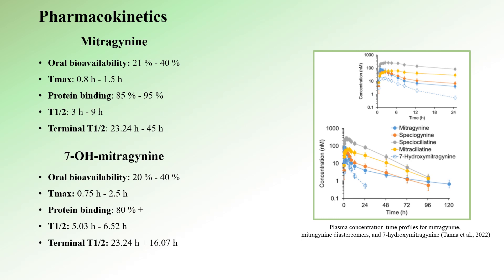As for 7-hydroxymitragynine, its oral bioavailability falls within a similar range to mitragynine, approximately 20 to 40%. The Tmax for 7-hydroxymitragynine is between 0.75 to 2.5 hours, and it also exhibits high protein binding at about 80%. The biological half-life of 7-hydroxymitragynine ranges from 5 to 6.5 hours, and the terminal half-life stands at approximately 23 hours, with a deviation of ±16. As depicted on the graph, all these compounds maintain a relatively long-lasting presence in human blood plasma following oral Kratom administration, detectable even after 24 hours.